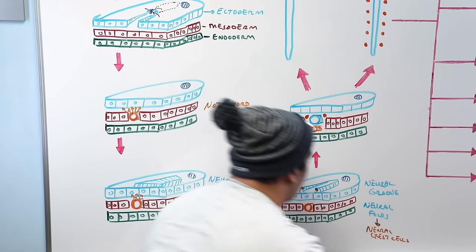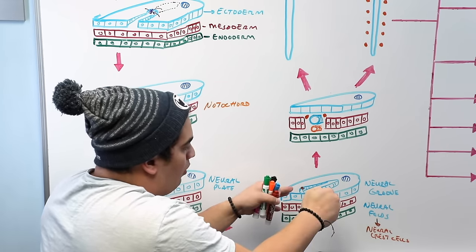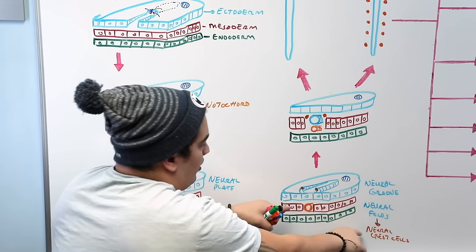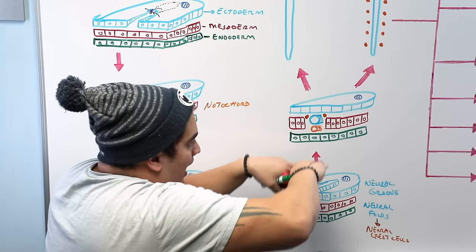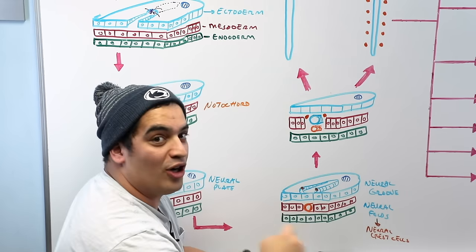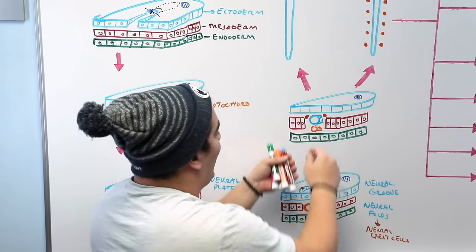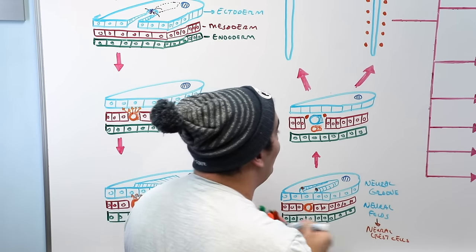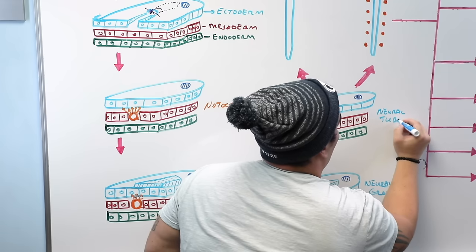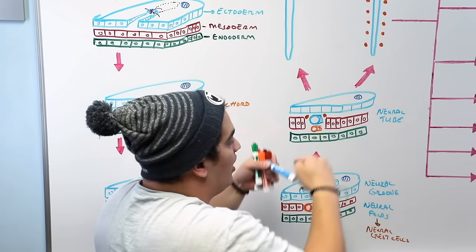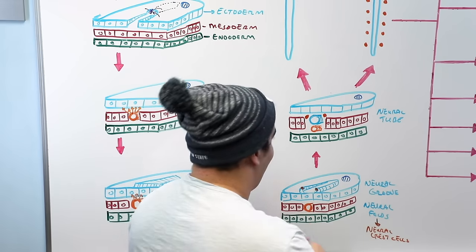So we take the plate, form a divot, get a groove, the folds approach one another. Some of the neural folds differentiate into neural crest cells, then those folds touch and fuse, budding underneath the ectoderm sandwiched between the mesoderm. The result is your neural tube, with neural crest cells on the sides formed from the neural fold differentiating.